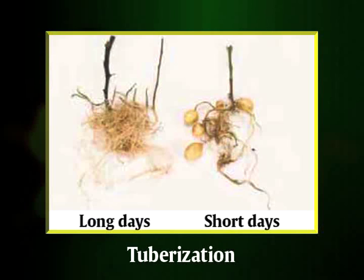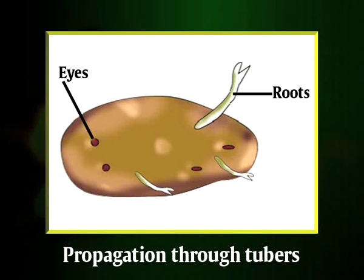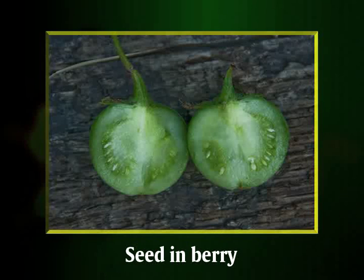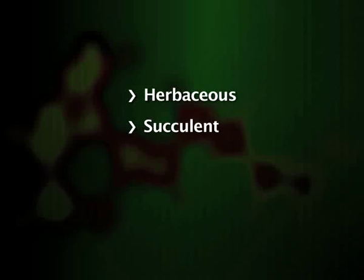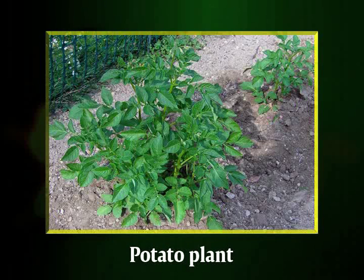Short-day conditions induce earliness and usually good tuberisation; therefore, under short-day conditions, successful crops of tubers can be raised within a short period. Regarding habit, the plants are perpetuated through tubers, but propagation through seed derived from berries is also possible. When propagated from seed the plants are however not true to type. Under normal conditions of growth the plants are herbaceous, succulent, bushy and about one to four feet in height; under fertile conditions the plant produces a heavy foliage mass.